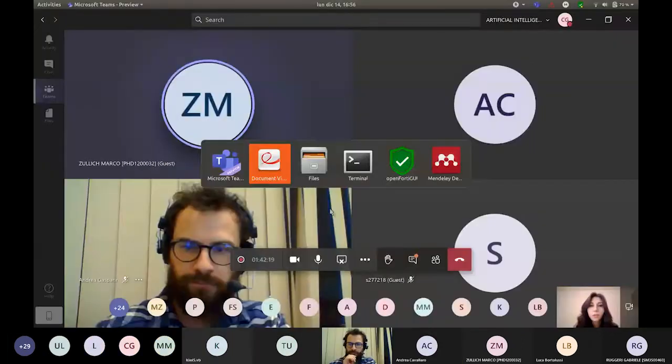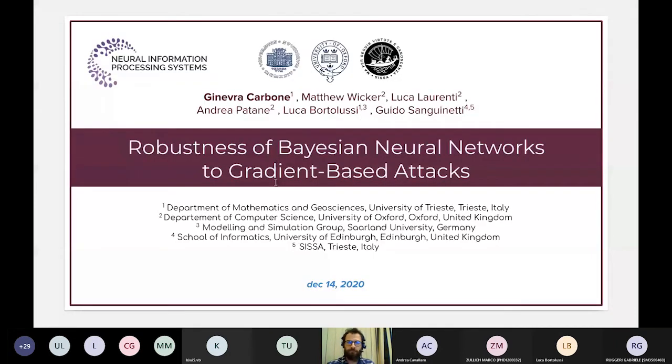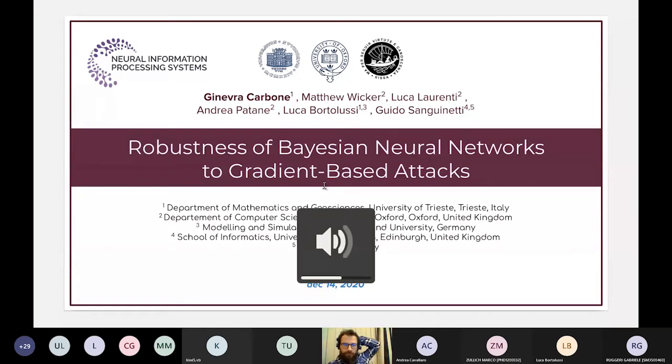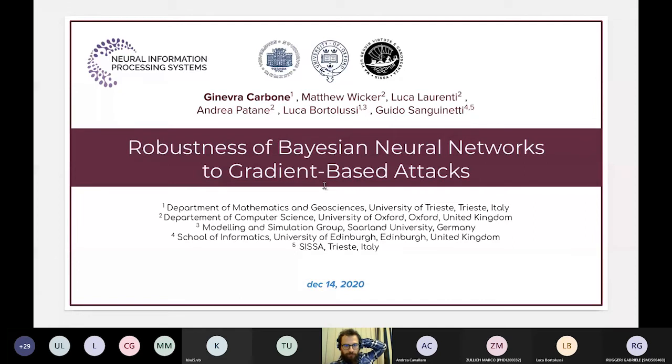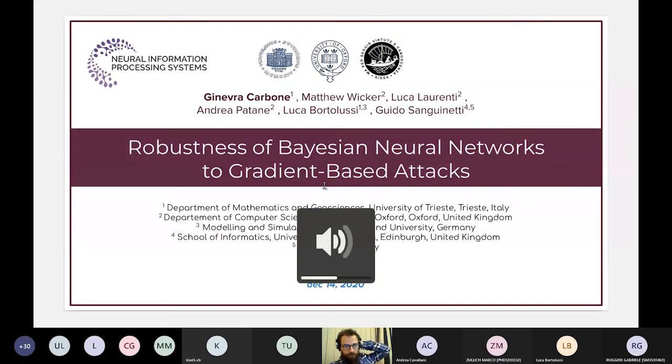NeurIPS, for who doesn't know, is one of the top conferences in neural processing, so neural networks and deep learning. And here it is. The title of the work is Robustness of Bayesian Neural Networks to Gradient-Based Attacks. So, I think she will do a quick introduction on Bayesian neural networks to quickly update everyone on these models and then go on presenting her work.